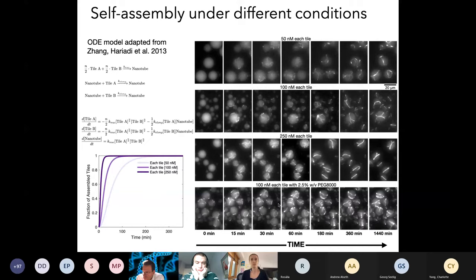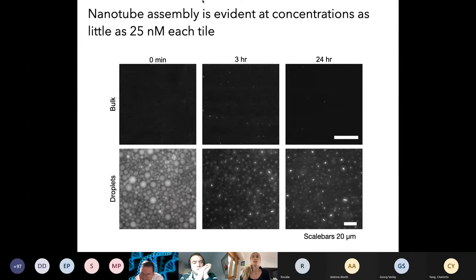This is consistent with even a simple model. We adapted an ODE model from Zhang, Hariadi et al., where they basically modeled simply the assembly of tiles and the elongation of nanotubes. So, nucleation and elongation. This gives you three ODEs. From these ODEs, one can model the fraction of assembled tiles. Obviously, the more tiles we have, the faster the assembly is. One more thing that I wanted to mention about concentration is that nanotube assembly is visible, is evident, at concentrations as little as 25 nanomolar each tile.